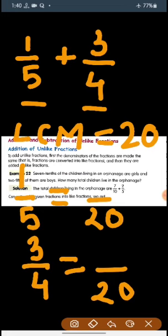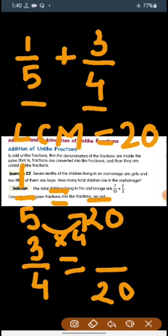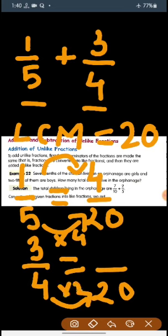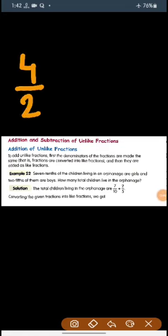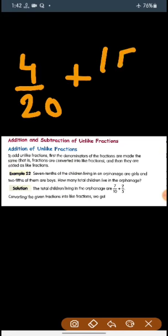So here we have to convert the denominator 5 to 20. How can 5 be converted to 20? By multiplying by 4. So in the numerator we also multiply by 4: 1 times 4 equals 4. And for the second fraction, we multiply 4 by 5 to get 20, so 3 times 5 gives us 15.